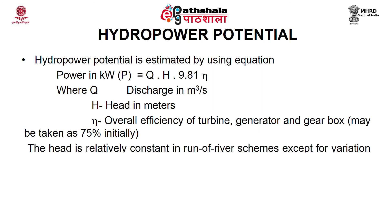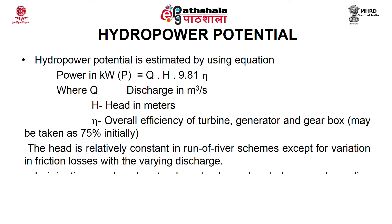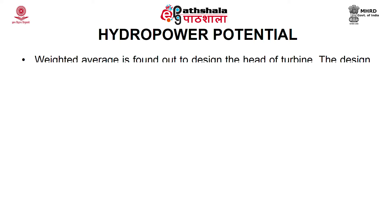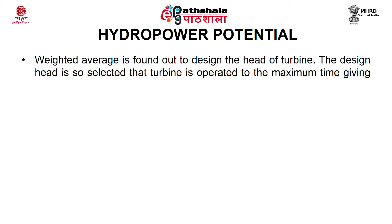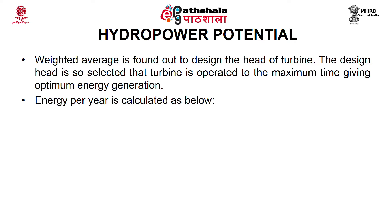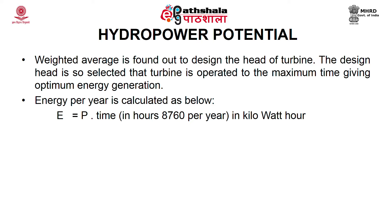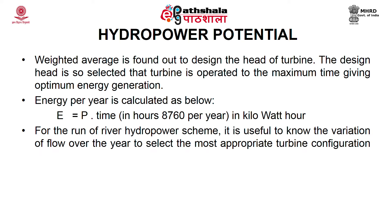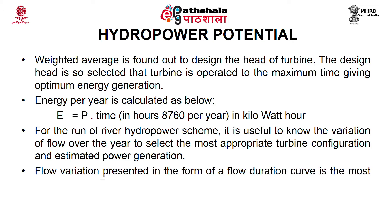The head is relatively constant in run-of-river schemes, except for variation due to friction losses. In irrigation canal or dam toe schemes, head varies with the season as the water level in the dam changes. A weighted average is used to design the turbine head, selected so the turbine operates at maximum time for optimum energy generation. Annual energy is calculated as E = P × 8,760 hours, in kilowatt-hours.